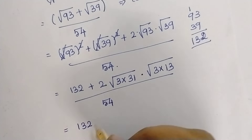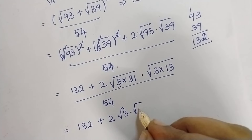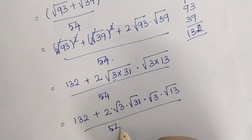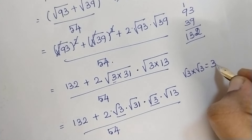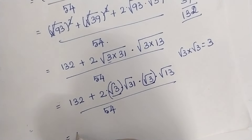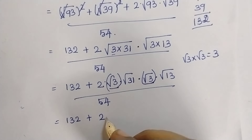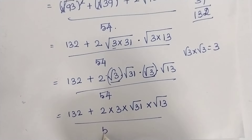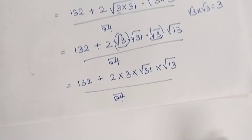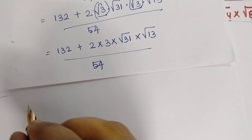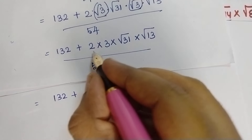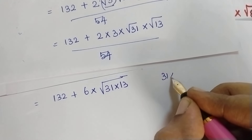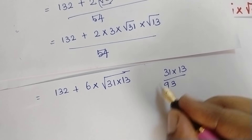Therefore, this equals 132 plus 2 into root 3 multiplied by root 31 multiplied by root 3 multiplied by root 13, divided by 54. Root 3 multiplied by root 3 equals 3. So this becomes 132 plus 3 multiplied by 2 — we need to multiply 31 and 13: 1 times 3 is 3, 1 times 3 is 3, 3 times 1 is 3, 3 times 3 is 9, giving 403.